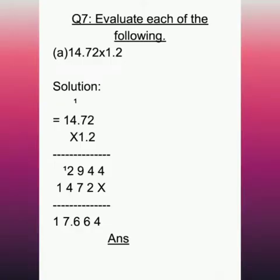Question number 7, part A is 14.72 multiplied by 1.2. First we have to write the solution, then arrange the values: 14.72 multiplied by 1.2. Both numbers are multiplied. 2 multiplied by 2, 2 times 2 is 4. 2 times 7 is 14. We put 4 below and 1 carry. 2 times 4 is 8, 8 plus 1 equals 9. 2 times 1 is 2.